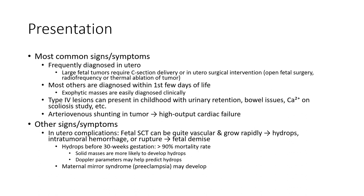Most common signs and symptoms: frequently diagnosed in utero. Large fetal tumors require C-section delivery, or in utero surgical intervention — open fetal surgery or radiofrequency or thermal ablation. Most diagnoses are made within the first two days of life. Exophytic masses are easily diagnosed clinically. Type 4 lesions can present in childhood with urinary retention or bowel issues, classified on Altman classification.